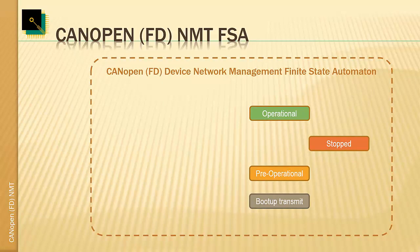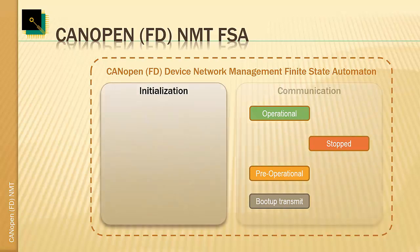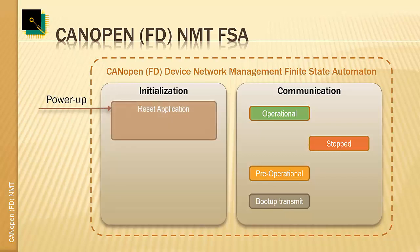The state machine is separated into two blocks. On the left side we have the initialization part, and on the right side the communication part. On power-up we enter the initialization block and go into the reset application block, where the application data gets initialized and some low-level hardware initialization related to the CAN interface — specific pins, clock settings, and such — is performed.